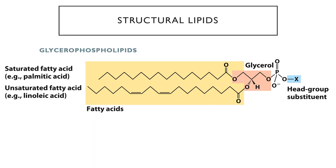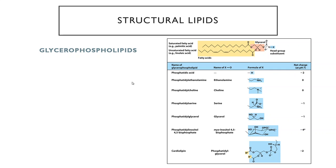These are different glycerophospholipids that have different groups on them. If the phosphate just has a hydrogen — no extra substituent — then it's just phosphatidic acid. Phosphatidylethanolamine would be if you add an ethanolamine group. Choline is a nitrogen with four carbon groups attached to it. And phosphatidylserine is just the serine amino acid linked to that glycerol. If you have another glycerol added, then it's phosphatidylglycerol.